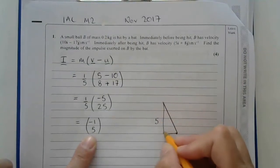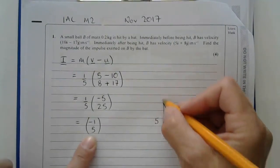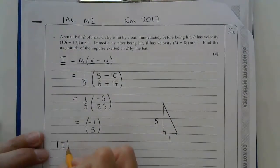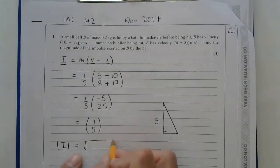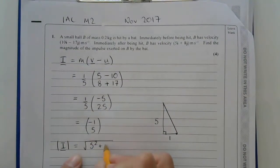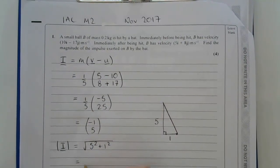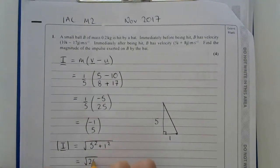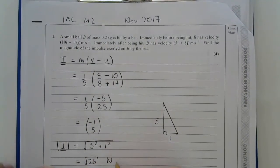1, 5 with a right angle here. And so therefore the length of this would be the magnitude of the impulse. So I'm going to do 5 squared plus 1 squared, and then I'll get the square root of 25 plus 1, which is 26. That is measured in Newton seconds.